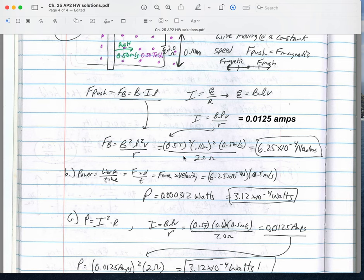I could actually say I have BLV which goes in for E here, and then this BLV over R, which is the current, could go in for I here. So I could really put all this stuff together, which I normally don't do, but I wanted to show you how you could do that. I could do it stepwise, like I could figure out E equals BLV on its own, then divide by the resistance of the wire to get the current, and then put the current in here.